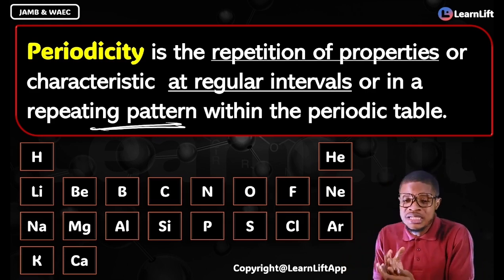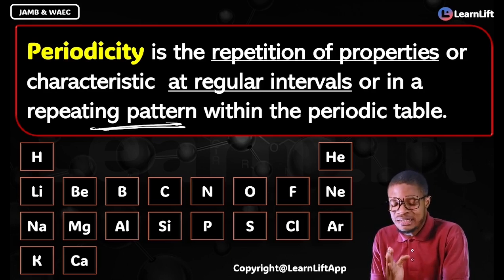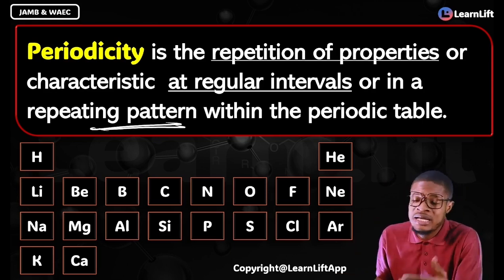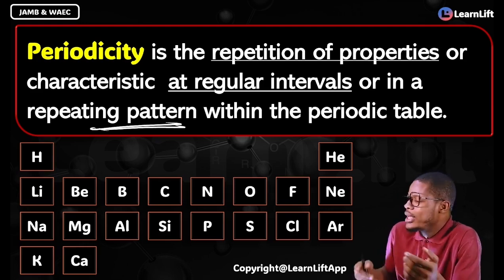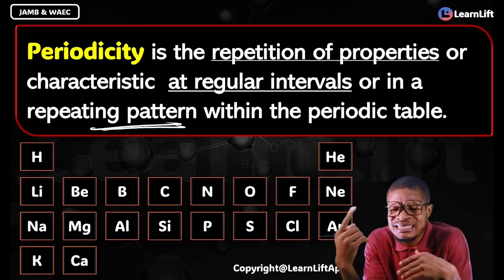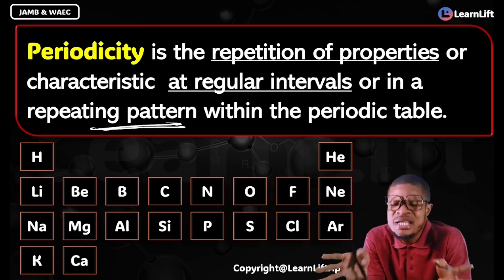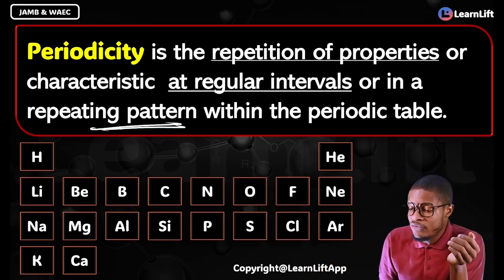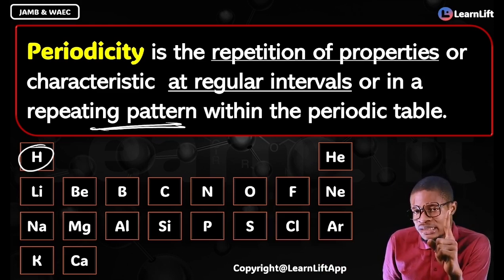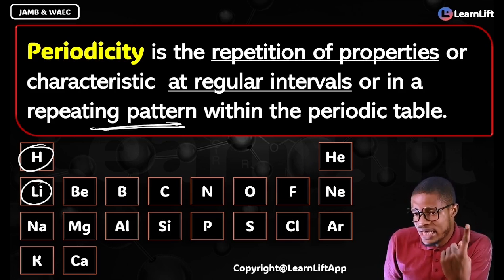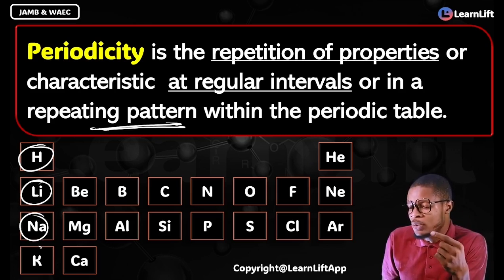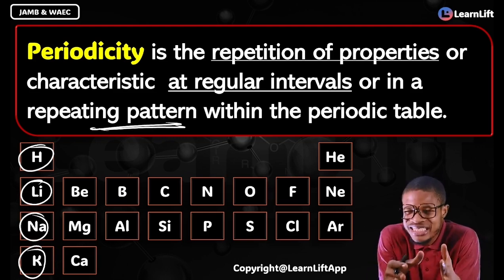Periodicity is the repetition of properties or characteristics at regular intervals or a repeating pattern within the periodic table. For example, looking at your Group 1 elements: hydrogen has 1 valence electron, lithium has 1 valence electron, sodium has 1 valence electron, potassium has 1 valence electron. That property is repeating — what do we call that? Periodicity.